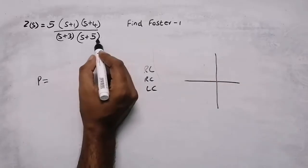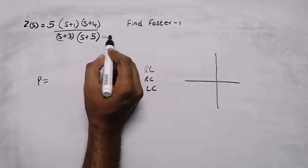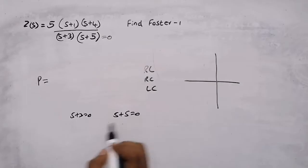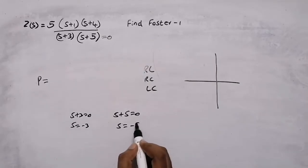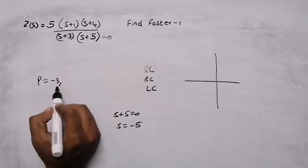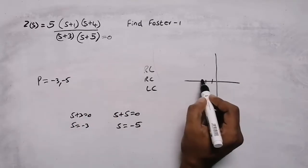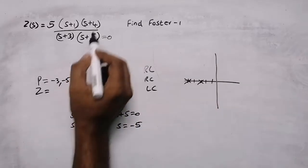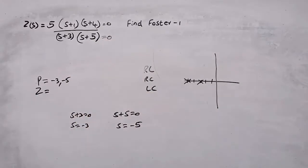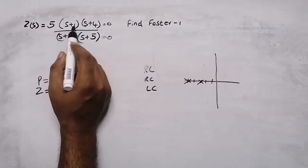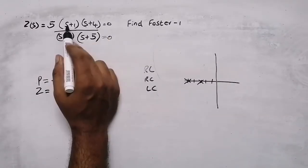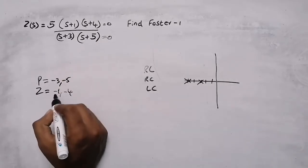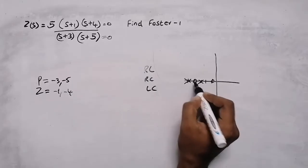Poles are found by equating the denominator equal to zero. When we equate the denominator to zero, we get either s plus 3 equal to zero or s plus 5 equal to zero, giving us poles at s equals minus 3 and s equals minus 5. For zeros, we equate the numerator equal to zero, getting s plus 1 equal to zero or s plus 4 equal to zero, giving zeros at s equals minus 1 and s equals minus 4.